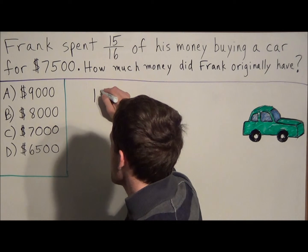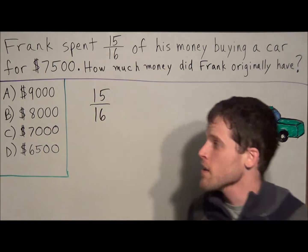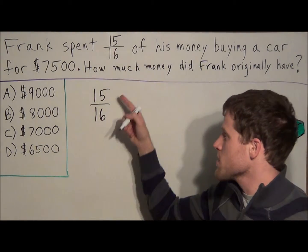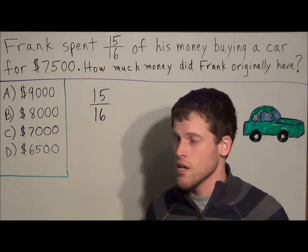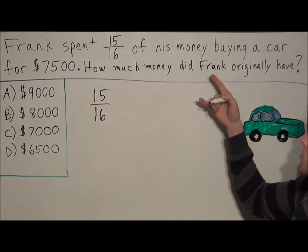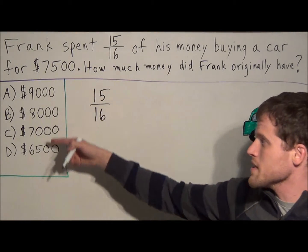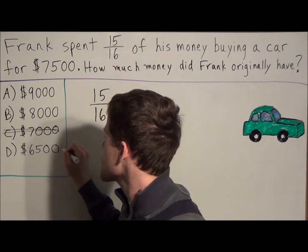15 sixteenths, if we're looking at this fraction in the context of the problem, Frank spent 15 sixteenths of his money. Because this fraction is less than 1, that means Frank only spent part of his money. So if part of his money is equal to $7,500, then his original amount of money is more than $7,500. So when we look at these answer choices, we could cross off choices C and choice D,